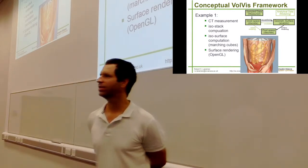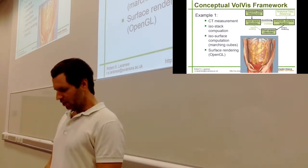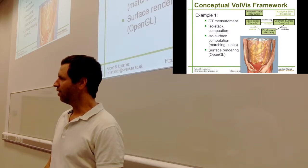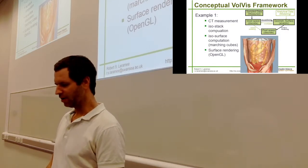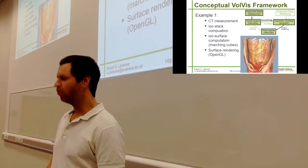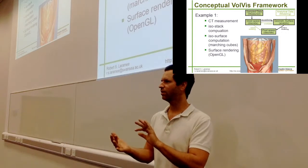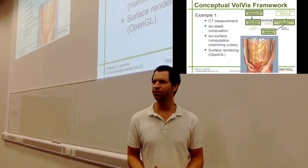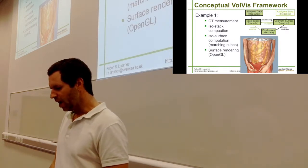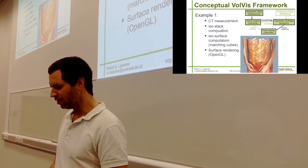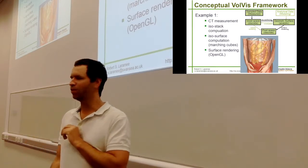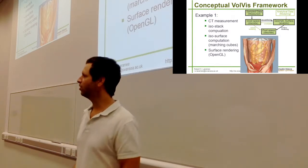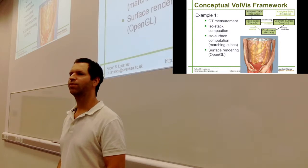Here's an example of the volume visualization conceptual framework — I could probably call it the VolVis pipeline. This example starts with sampled data from something like a CT or MRI scanner, typically used in medicine. Those produce a volume of data on a 3D grid. We can represent those with voxels or cells, and then take those voxels or cells and compute surfaces — extract surfaces from the volume. Surfaces are typically represented by triangles in computer graphics and visualization.